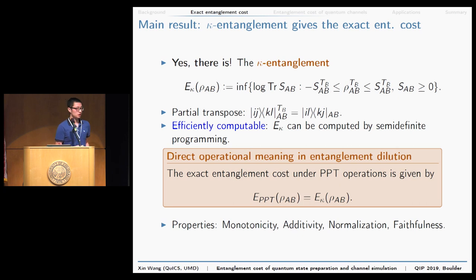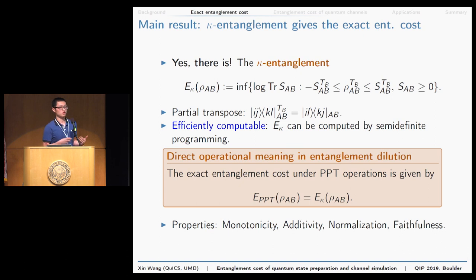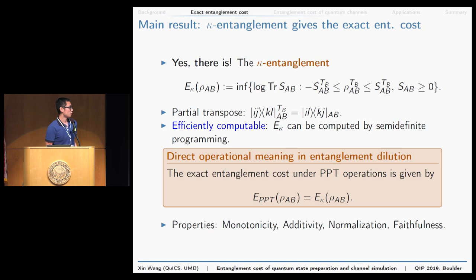Our main result answers this question affirmatively. Our main contribution is introducing the kappa entanglement. It minimizes the trace of a positive definite operator S_AB such that the partial transpose of the state is bounded by the partial transpose of the operator, where the partial transpose T_B is taken on the B subsystem. Since this can be solved by semidefinite programming, the kappa entanglement is efficiently computable. We also found its direct operational meaning in entanglement dilution: the exact entanglement cost under PPT operations is given by the kappa entanglement. Additionally, the kappa entanglement has many other nice properties, like additivity and normalization.